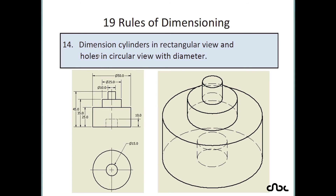Rule number 14: dimension cylinders in the rectangular view and holes in the circular view with diameter. Cylindrical features should be dimensioned in the rectangular view, while holes should be dimensioned in the circular view. So the circular view is used for holes and the rectangular view is used for cylindrical features.